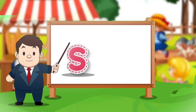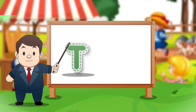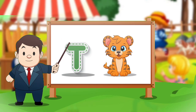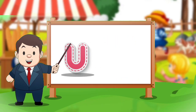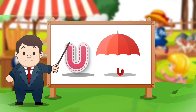S. S for sun. T. T for tiger. U. U for umbrella.